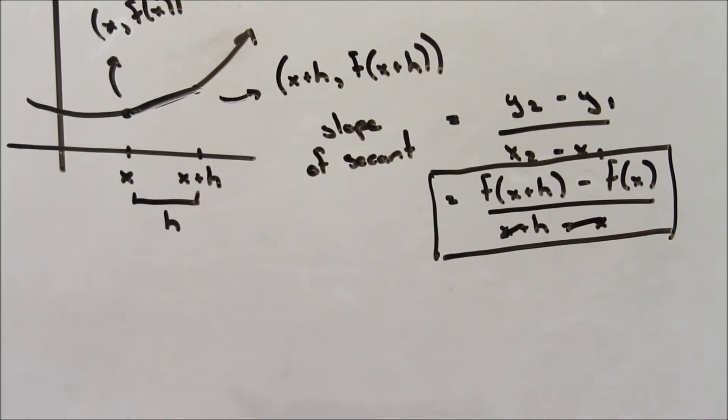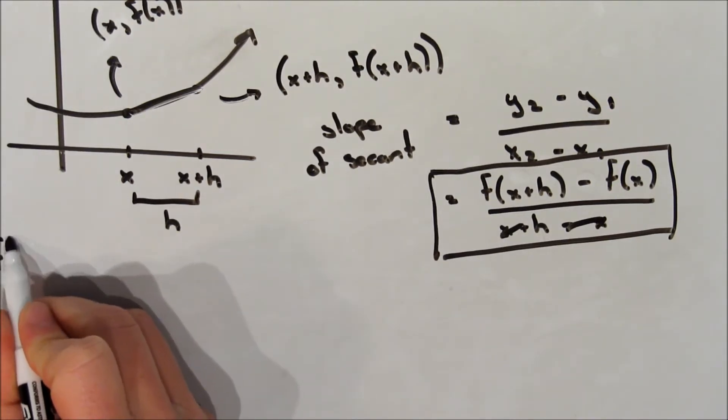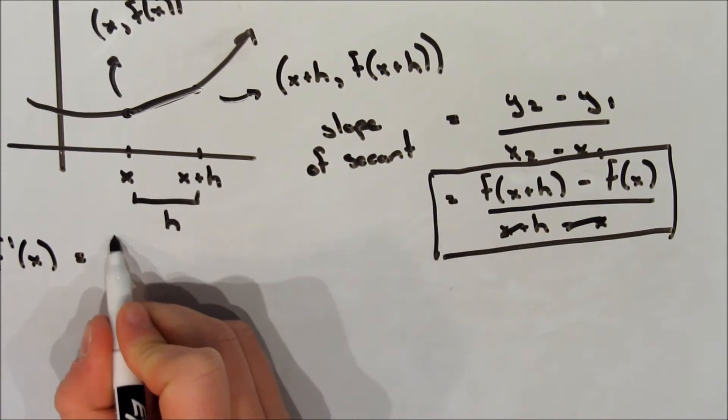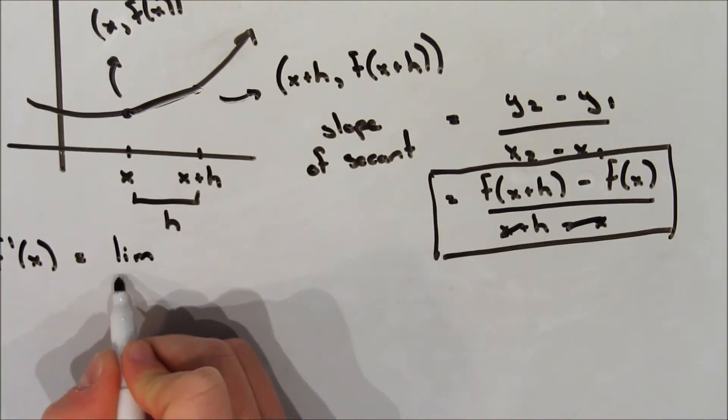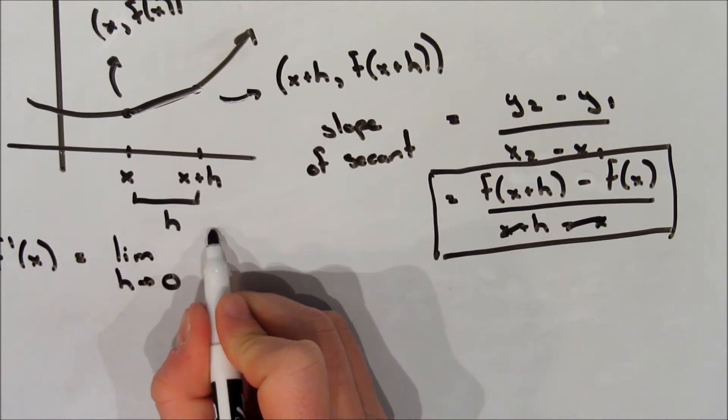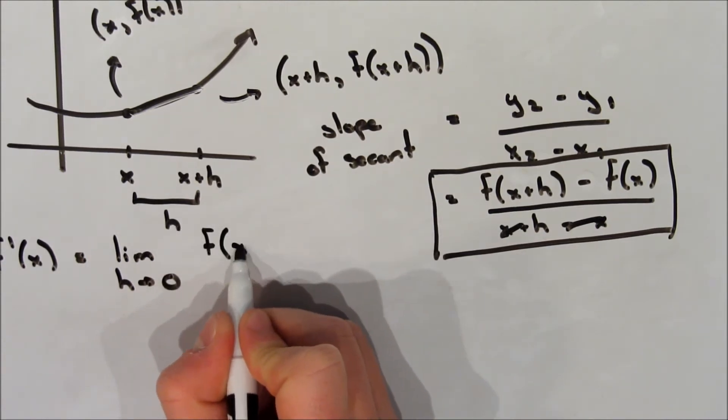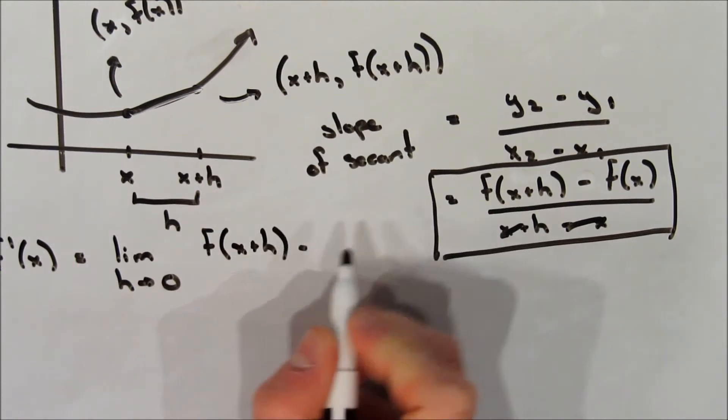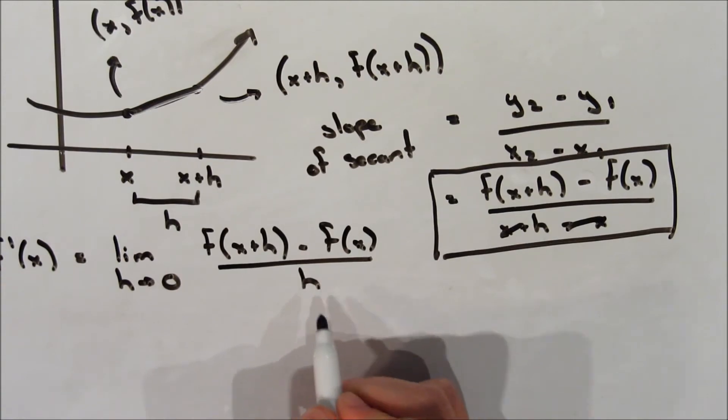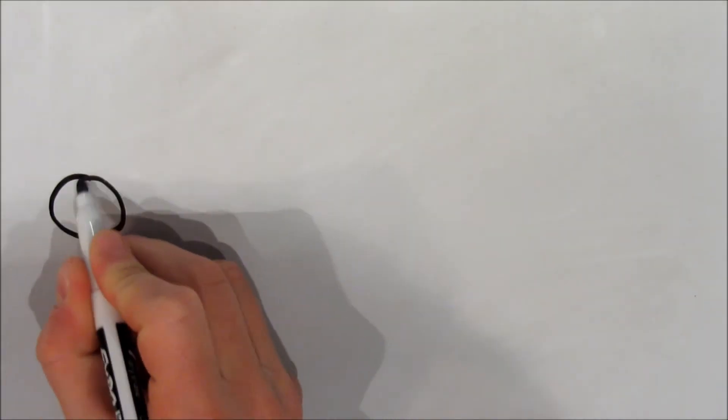Now, we wanted the second point to try and get closer and closer to our first point in order to find the tangent line because we're trying to find the limit. So, essentially, we want h to be as close to zero as possible. So, we say the tangent line, f prime of x, is equal to the limit as h approaches zero, so h is getting really small, and then the formula for our secant line, which we determined before.